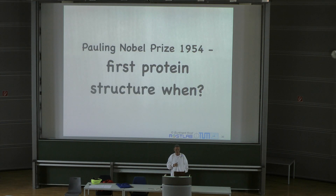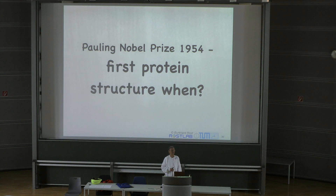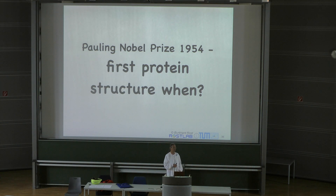The first structure was determined around 1958-1960. Linus Pauling got the Nobel Prize in 1954 for the idea that secondary structure is determined by hydrogen bonds. Linus Pauling also got two Nobel Prizes — one for peace, having started the movement that stopped the testing of atomic bombs. He was also the one who completely favored the idea that vitamin C is good for your health and on a grand scale advertised taking a lot of it.